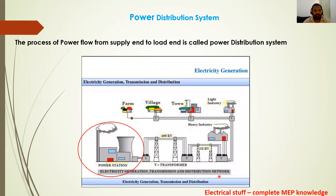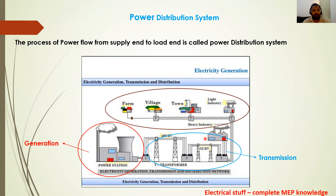We have a power station, step-up transformers, and transmission lines. Then we have distribution transformers and loads. This first part is called the generation part where power is generated, the middle part is the transmission part where power is transmitted, and finally the distribution transformers and load make up the distribution system.